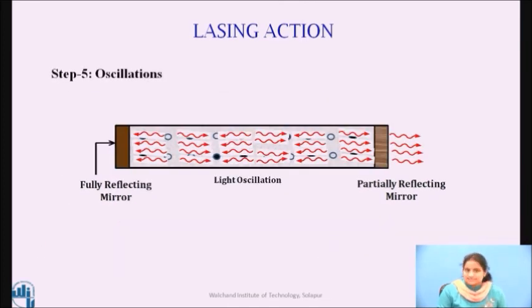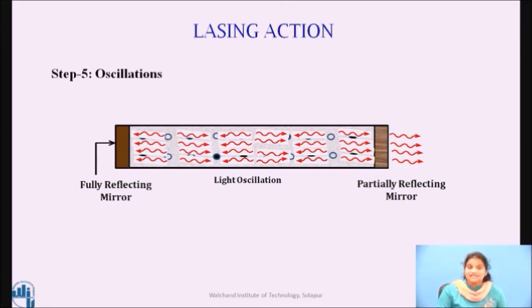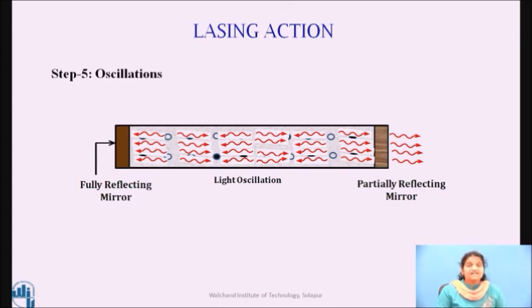The last step in the lasing action is oscillations. On every reflection at the front end mirror, light is partly transmitted through it, which is a loss of energy from the resonator. When the losses occurring at the mirrors and within the medium together balance the gain, a stable and strong laser beam will come out from the front end mirror, as shown in the figure. In this way, the steps involved in lasing action are: first pumping, then population inversion, then spontaneous emission, leading to stimulated emission and amplification, and lastly oscillations.